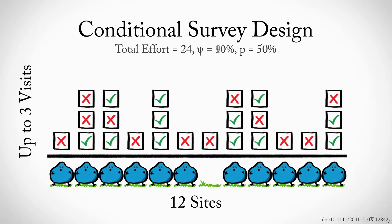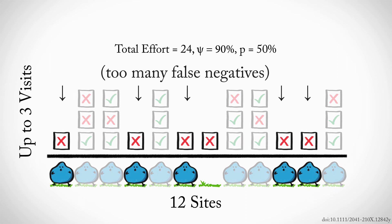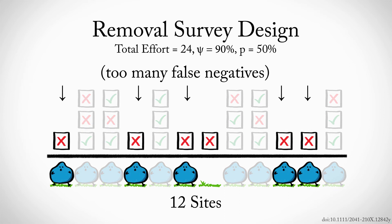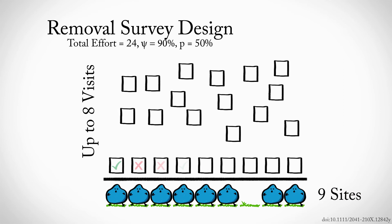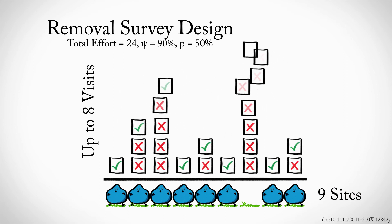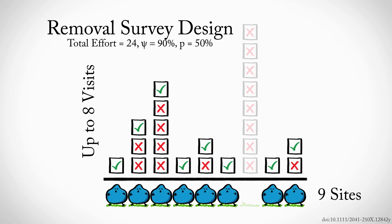The conditional design doesn't work very well for really common species, such as the Big Blue Bird, since it wastes too much effort resurveying sites where we already know the bird is. For common species, it's more important to figure out where the species isn't, which is the domain of the removal survey design. For Big Blue Birds, a removal design would have us survey nine sites until either the bird is detected, or we've completed eight surveys, whichever happens first. By distributing more effort to sites without detections, removal designs reduce the chance that we misclassify occupied sites as unoccupied, providing more accurate estimates of where the species isn't, and thus where it is.